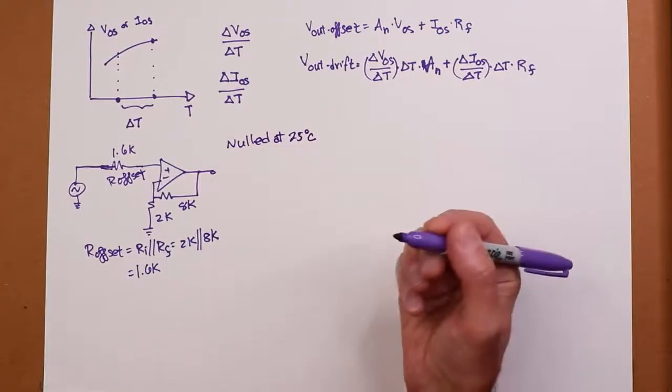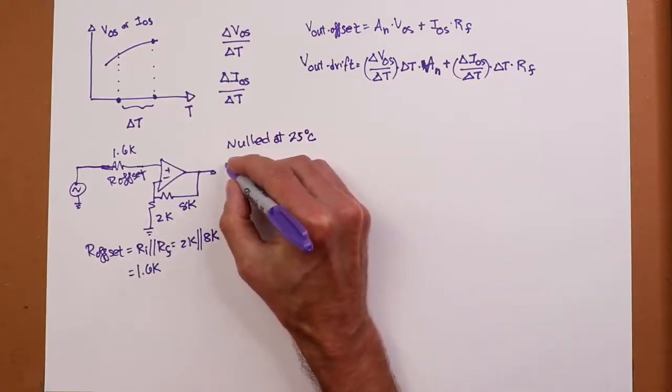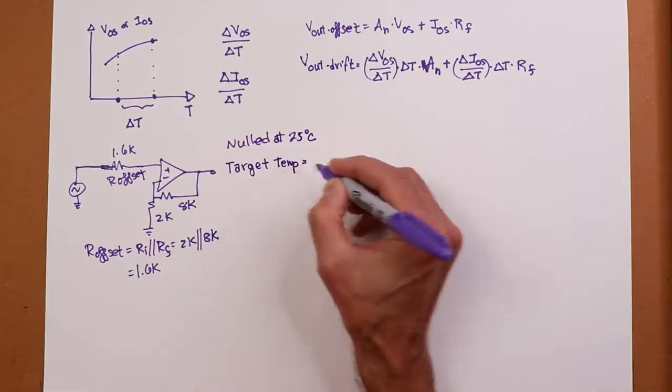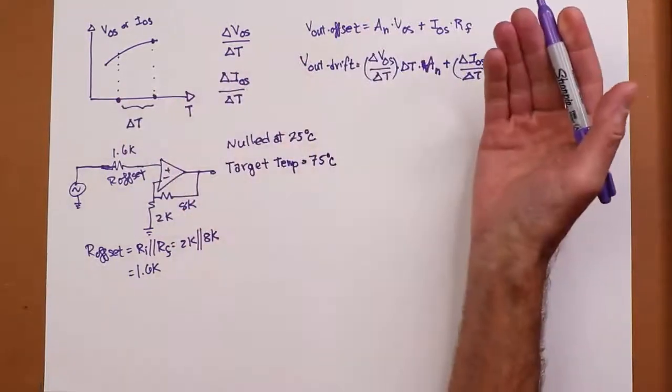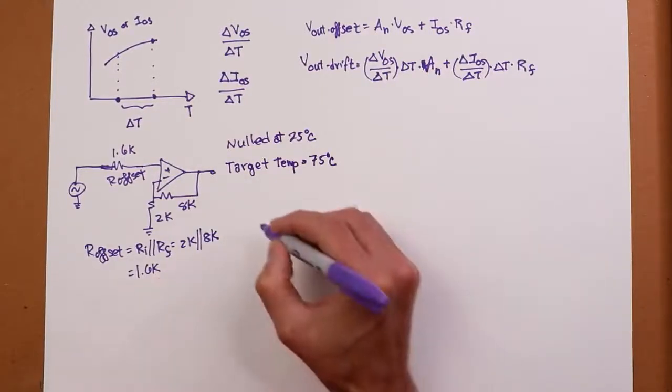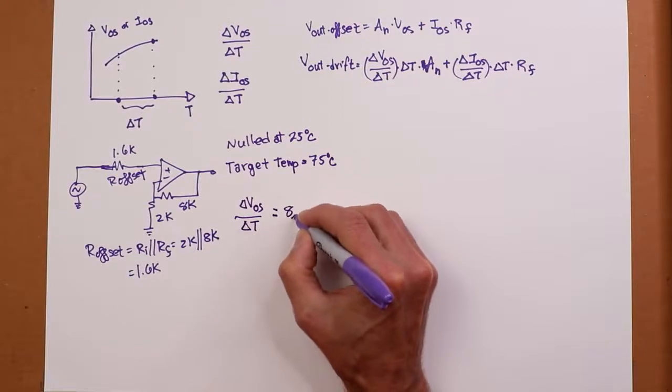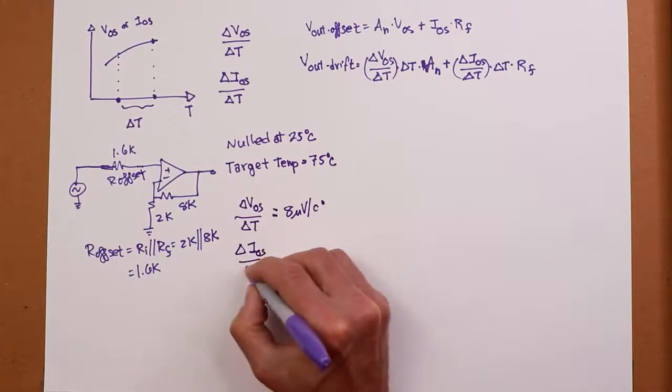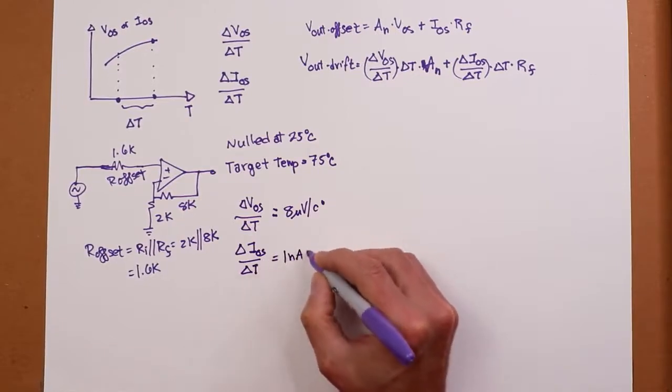Now what I want to do is find out how bad is this drift at a new temperature. So our target temperature will make that 75 degrees centigrade, kind of like what I'm drawing over here. New higher temperature. I look up on a datasheet and what I find is our delta V_OS delta T is 8 microvolts per centigrade degree, and our delta I_OS delta T is equal to 1 nanoamp per centigrade degree.